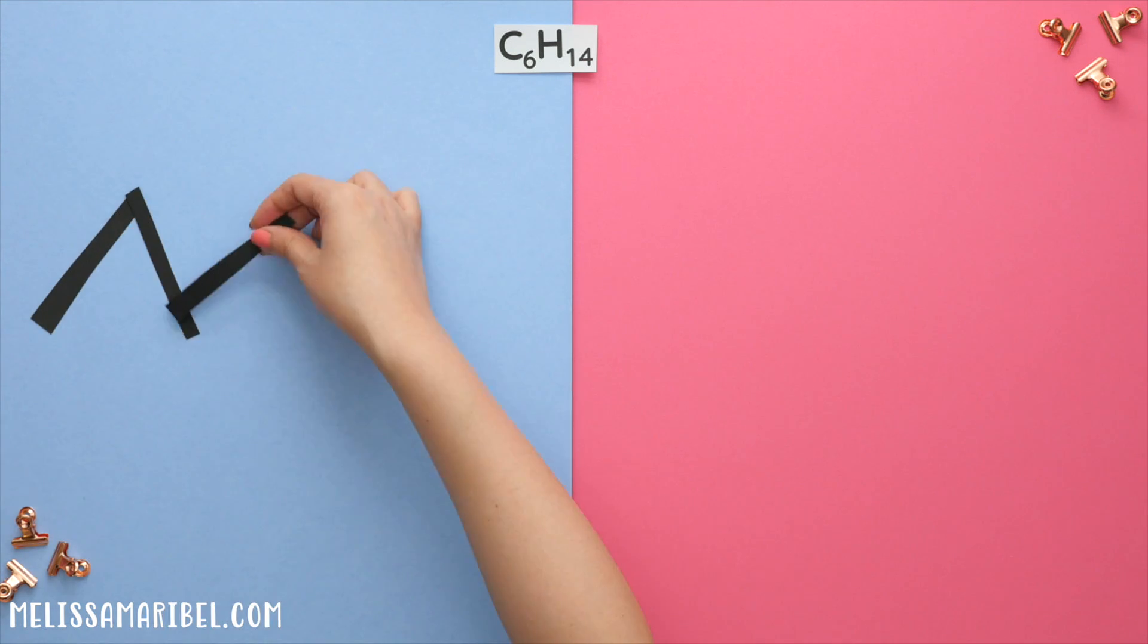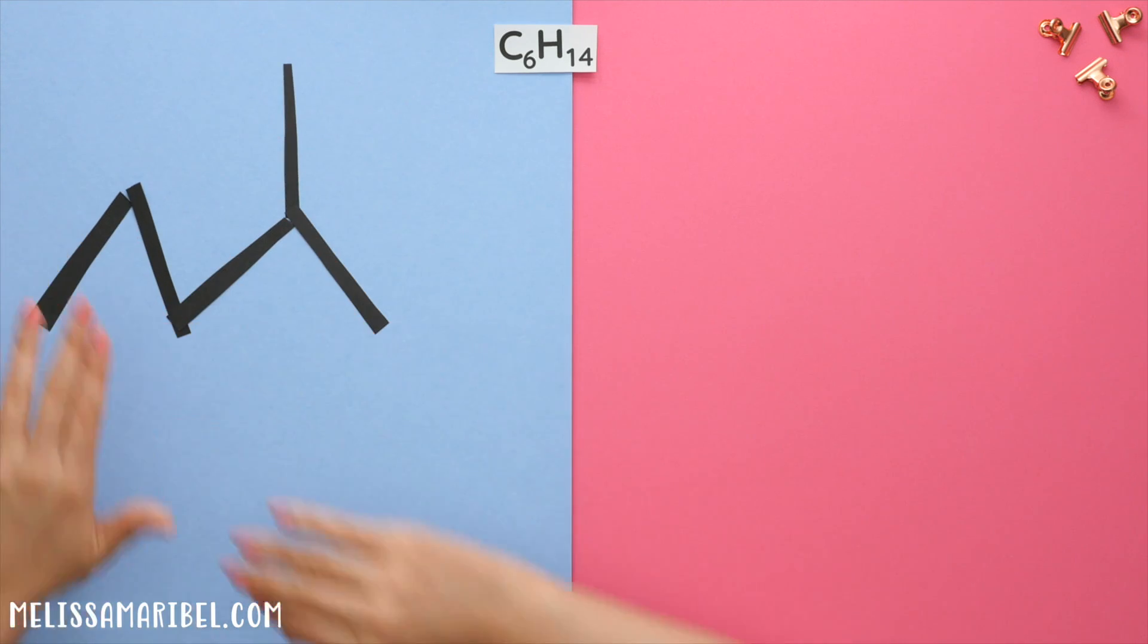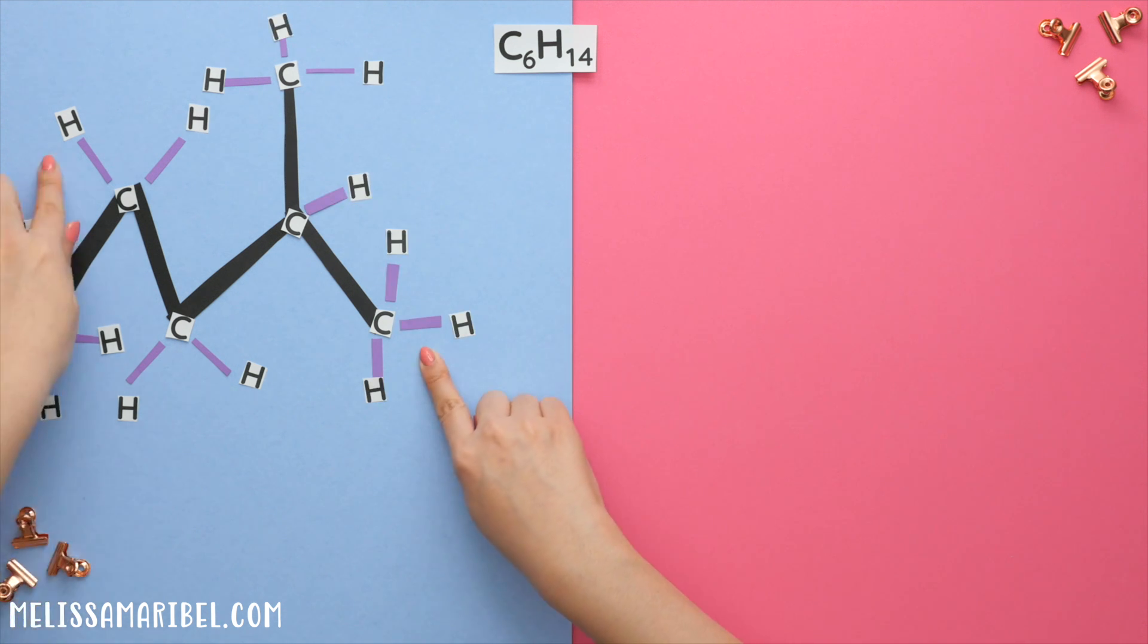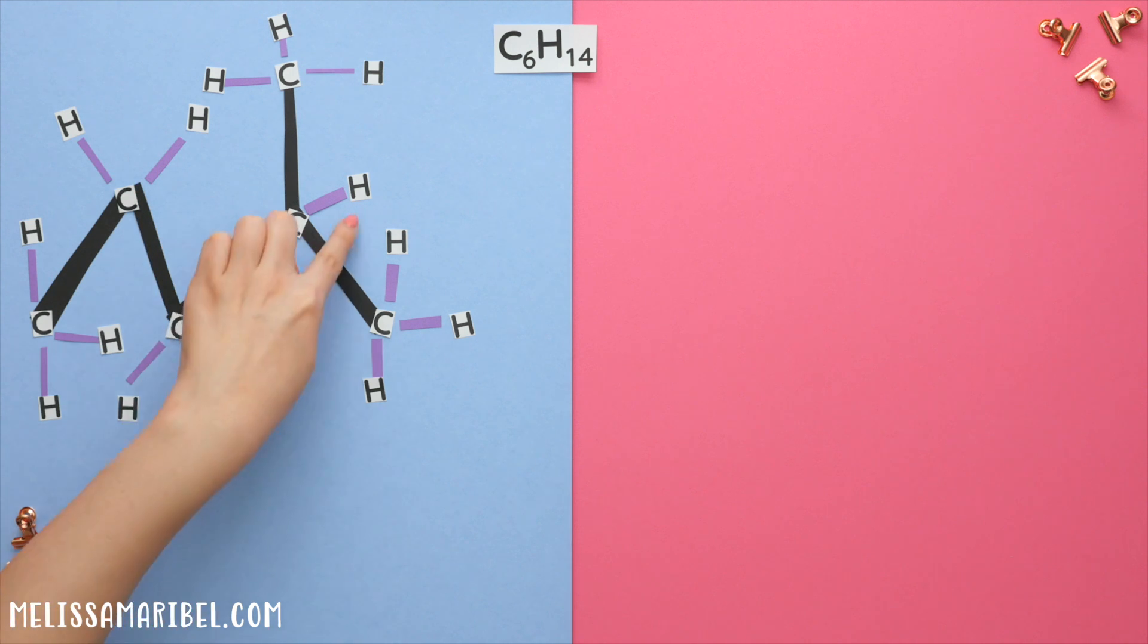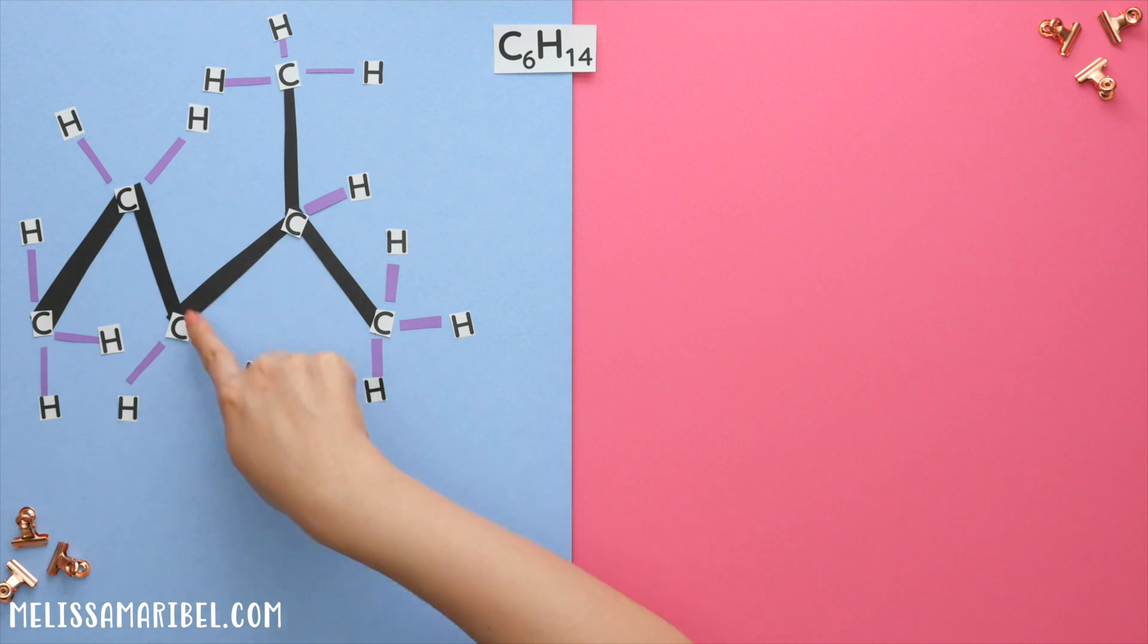Now start with drawing the simplest structure. In our case, it's the typical skeletal structure. Next start moving a carbon chain to a different location and double check that we still have the same amount of carbons and hydrogens as the given chemical formula. So I'll place all of the hydrogens where they need to be. And we have 3, 6, 7, 8, 9, 10, 11, 12, 13, 14 hydrogens. And 1, 2, 3, 4, 5, 6 carbons.